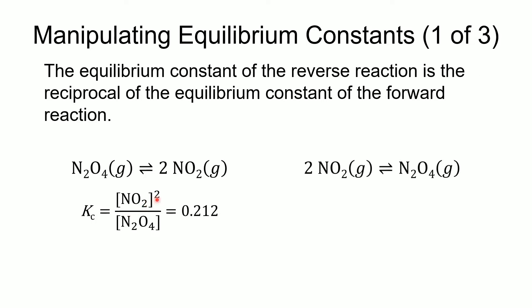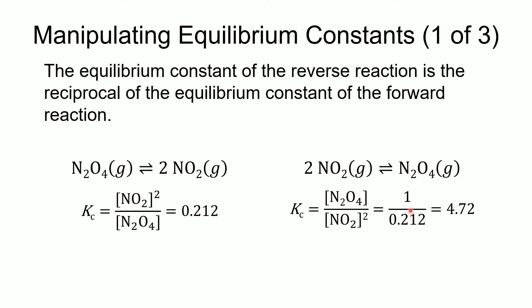If we change the direction of the reaction, then our equilibrium expression will be the reciprocal, and our equilibrium constant will also be the reciprocal. So 1 over 0.212 will give us 4.72. If we change the direction of the reaction, we take the reciprocal to get our value for Kc.